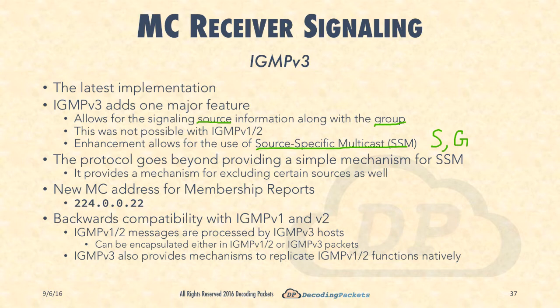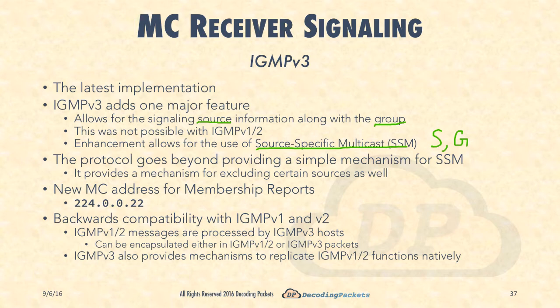The protocol goes beyond providing a simple mechanism for SSM. It would have been easy to just add a source field for S comma G signaling. There are additional mechanisms provided - for example, there is a mechanism to exclude certain sources. So you can signal source-specific multicast to receive only from a particular source, or you may choose to exclude that source while still receiving multicast packets on the group. There is now provision in the protocol to enable that.